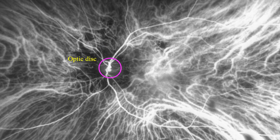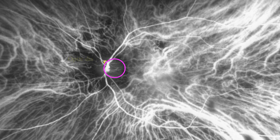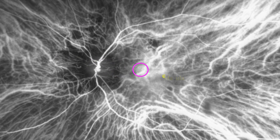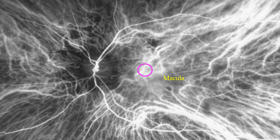Here, we can see the optic disc area highlighted. And here, the macula. Observe the important choroidal circulation that exists throughout this area, inside the temporal zone.